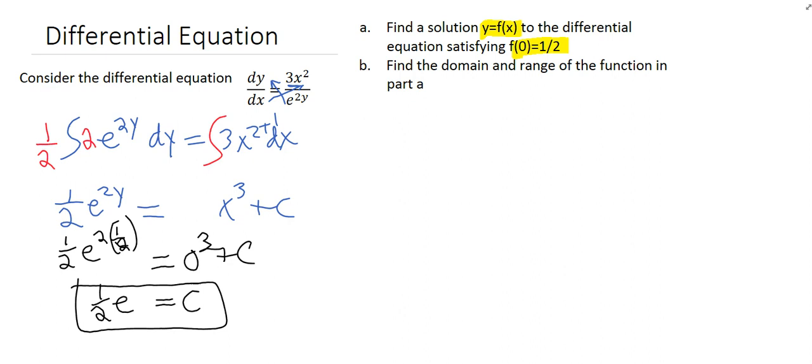And we don't need this right here. So going back to blue, we have 1/2 e^(2y) is equal to x³ plus 1/2 e. That's our constant. And I guess we could multiply out by 2 here, couldn't we? Get rid of this fraction. It might make it a little bit easier.